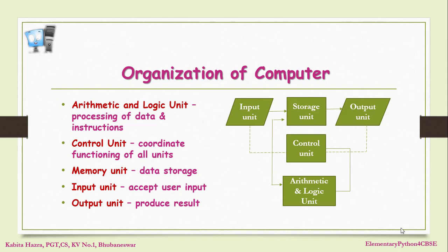Data is processed through the processing unit which consists of three different units: the memory unit for temporary storage of data during processing; the control unit which controls and coordinates the functioning of the different units; and the arithmetic and logic unit which processes the data and instructions. It gets the data from the storage unit and returns the result to the storage unit, from where the output unit produces the result through the monitor, printer, etc.